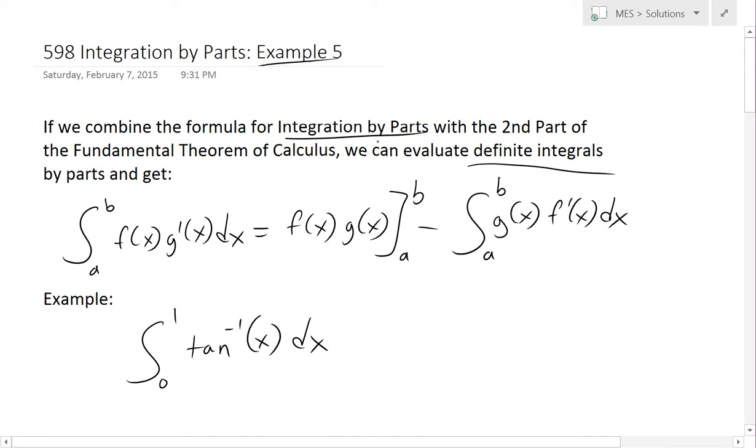The old formula for integration by parts is just indefinite or without these definite points A and B. So when we combine the second part of the theorem, which just has these from A to B formulas, then we basically get the same thing as the formula for integration by parts, but now it's for definite integrals, so from A to B.